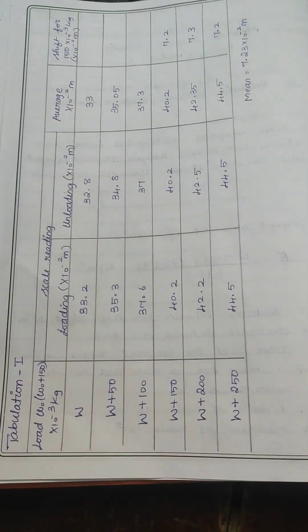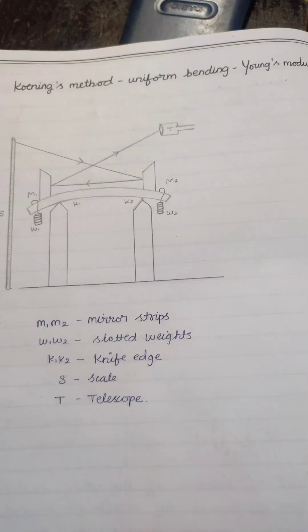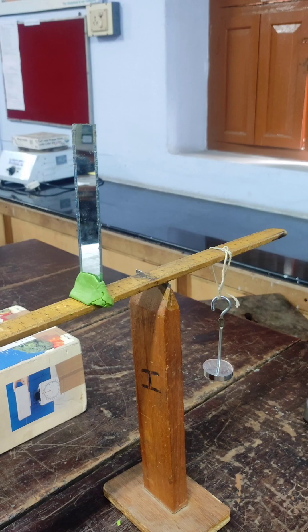In previous videos, we have already analyzed what is meant by uniform bending and non-uniform bending. Uniform bending means we have to put the weight equally on both sides like this.